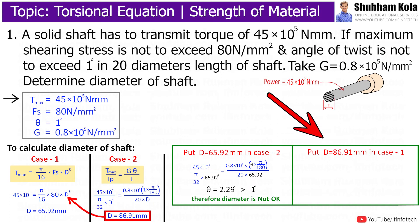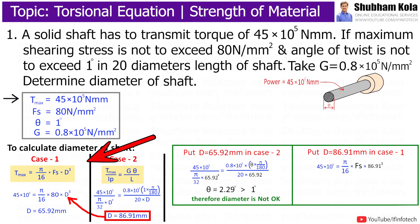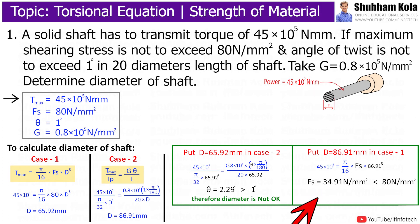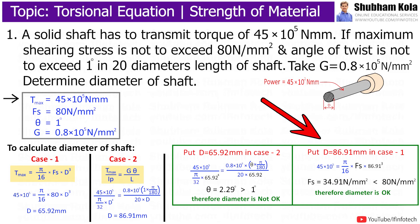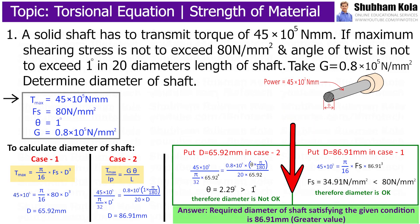Now I will put the second value, that is 86.91 mm diameter. Then I got maximum shear stress Fs as 34.91 N/m², which is less than the maximum shear stress given in the problem, that is 80 N/m². Therefore, this 86.91 mm diameter satisfies the given condition, and the required diameter of shaft satisfying the given condition is 86.91 mm, which is the greater value.